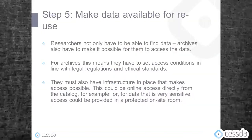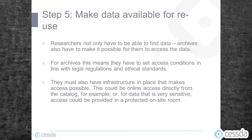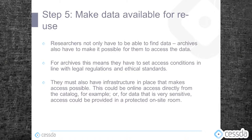Step five is making the data accessible for reuse. Researchers not only have to be able to find data — archives also have to make it possible for them to access the data. This means they have to set up access conditions in line with legal regulations and ethical standards. They must also have infrastructure in place that makes access possible. This could be online access directly from the catalog, or for data that is very sensitive, access could be provided in a protected on-site room.